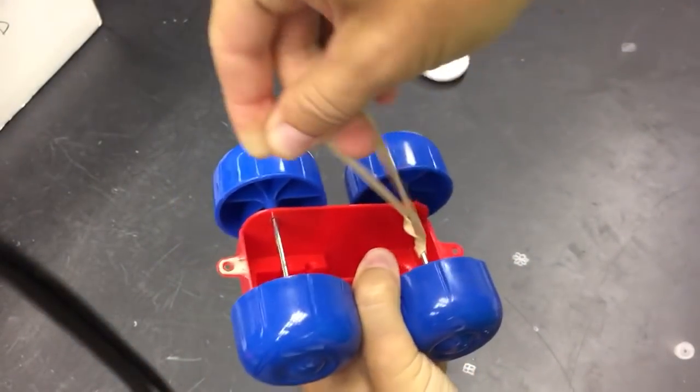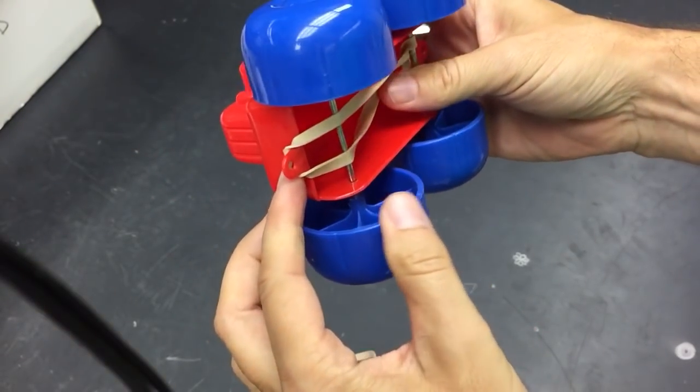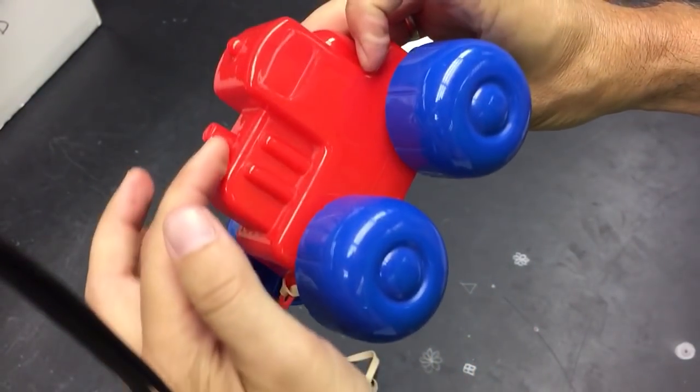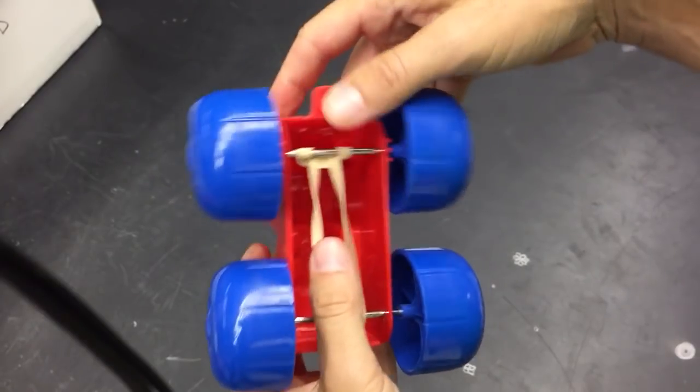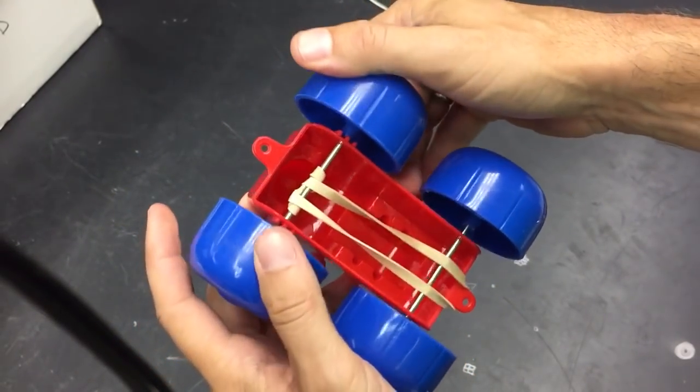Okay, now I'm going to take it and loop it over that. If you don't have a lip on the front, you could hook it on anything really. Now as I roll this back, it winds up, it stretches that rubber band, and then it goes.